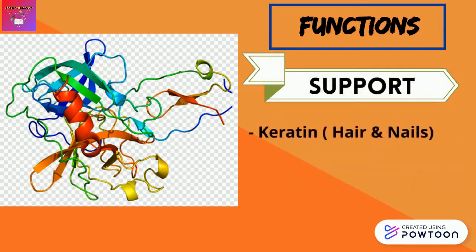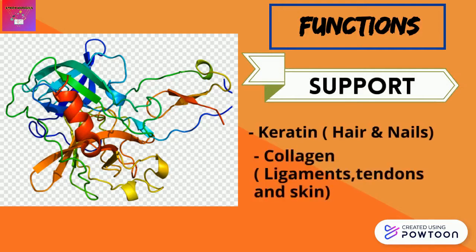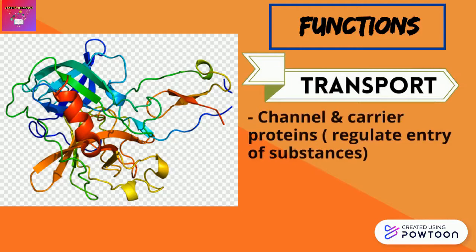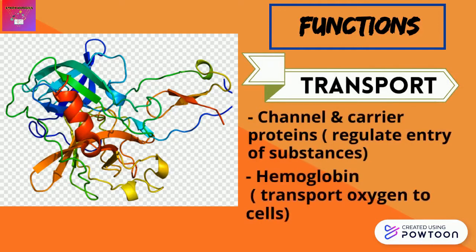Some proteins have structural function. For example, keratin makes up hair and nails, while collagen gives strength to ligaments, tendons, and skin. Next, the role of transport is played by channel and carrier proteins in the plasma membrane by regulating the entry and exit of substances. Hemoglobin is also a complex protein that transports oxygen to tissues and cells.